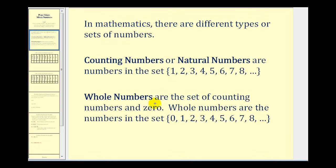Whole numbers are the set of counting numbers and zero. So whole numbers are the numbers in the set as we see here, and the only difference is whole numbers include zero, while counting numbers don't.